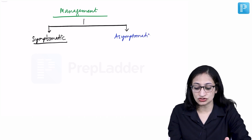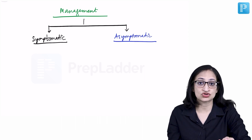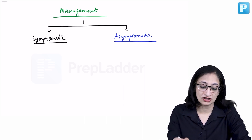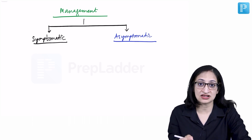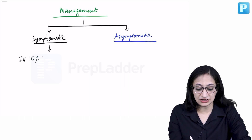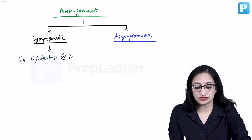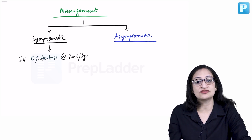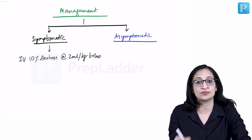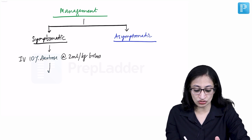If the baby is symptomatic, you don't wait — you straight away give an IV dextrose bolus. We give IV 10% dextrose at the rate of 2 ml per kg, given as a bolus, meaning a quick push injection intravenously.